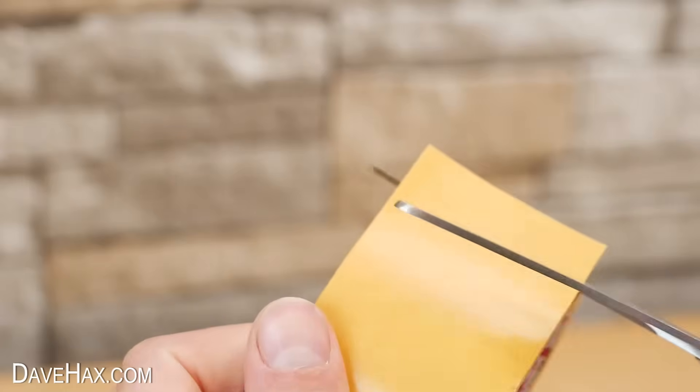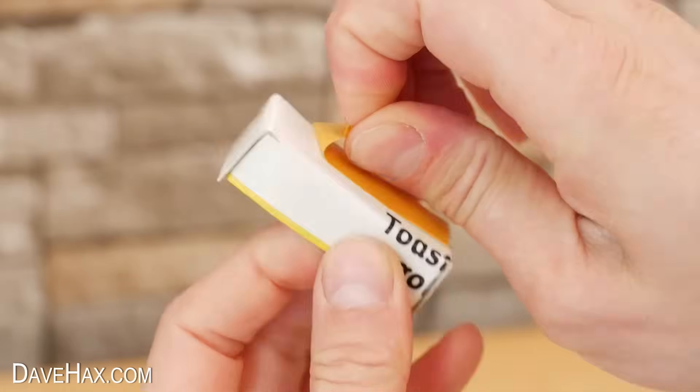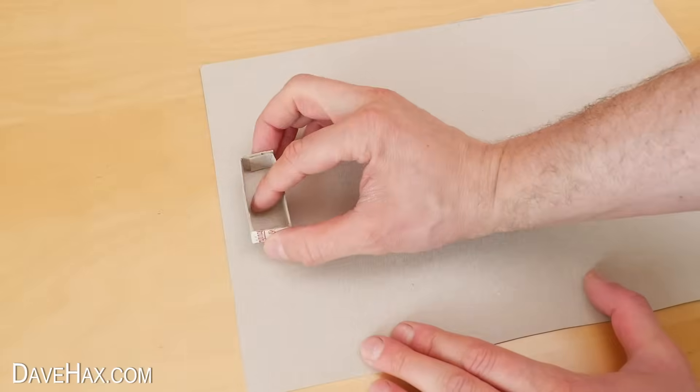To fix it to our circuit board I'm using some double-sided tape. Stick it to the bottom of the holder and fix it onto the board.